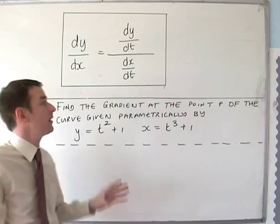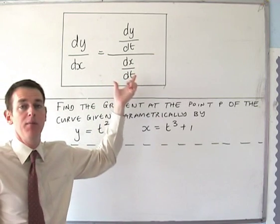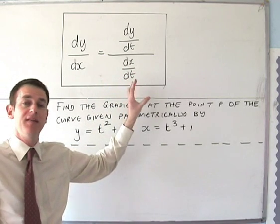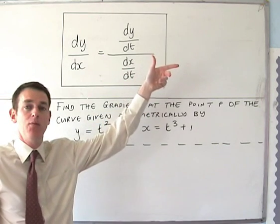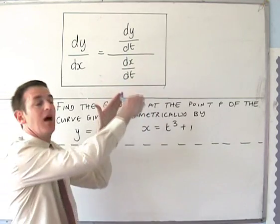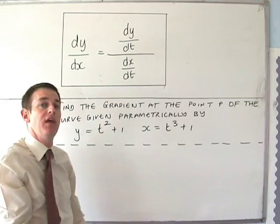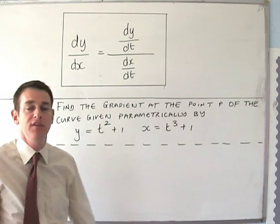If we wanted to prove this, we could just remember that dividing by a fraction is exactly the same as flipping the second one upside down. We'd then cross out both of the dt's and we'll end up with dy over dx.